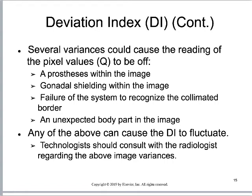With photostimulable phosphor systems — computer radiography systems — if the system did not recognize the exposure field borders, that would throw the deviation index off. If the technologist holding the patient has a portion of their anatomy in the exam, or if a portion of the patient's anatomy was in the image receptor that was not being studied, that would also throw the deviation index off. So you can't just critique an image off the deviation index alone — you've got to apply everything you've learned about positioning and image production.